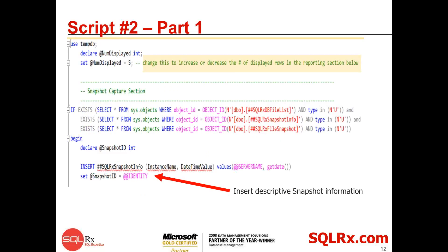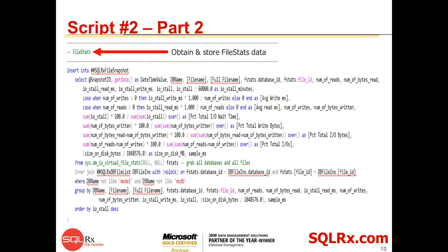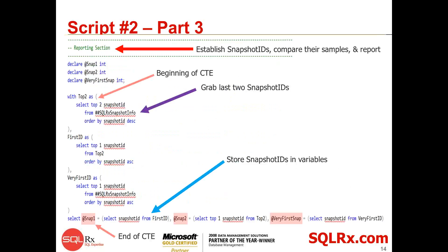You can change this to increase or decrease the number of displayed rows in the reporting section. This script identifies all the samples and takes care of everything you need. Here's the query that actually obtains and stores the file stats data. It does some computations to convert the numbers into meaningful values — converting things into milliseconds or percentages. Various different calculations are being performed. The next section actually does the reporting: it grabs the snapshot IDs depending on which comparison we're doing, and then at the end it performs the comparison.